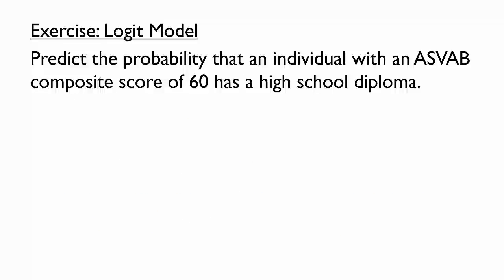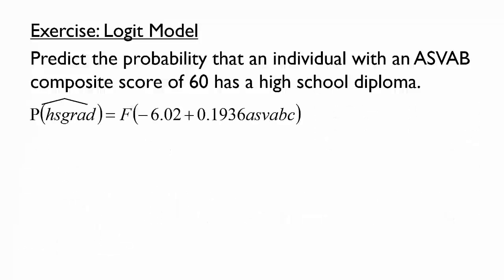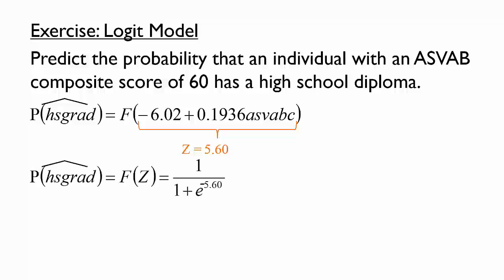As an exercise, try predicting the probability that an individual with an ASVAB score of 60 is a high school graduate. Use the results from the logit model and the logistic function where appropriate. You may wish to pause the video here while you work through the problem. Plugging in ASVAB C equals 60 yields Z equals 5.60. Plugging this value of Z into the logistic function yields 0.996, so an individual with an ASVAB score of 60 has a 99.6% chance of having a high school diploma.